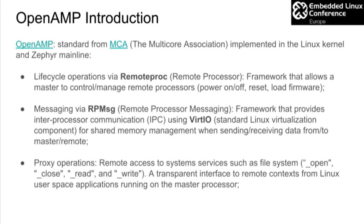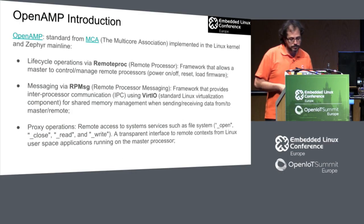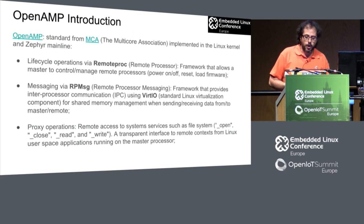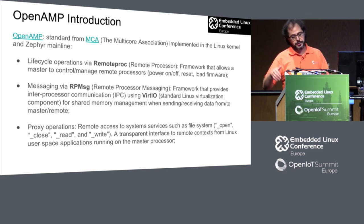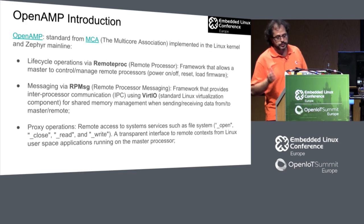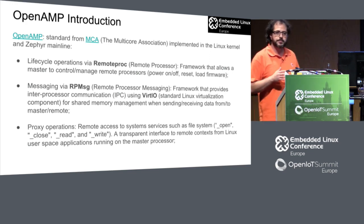Then there is the messaging framework RPMSG — Remote Processor Messaging — that provides inter-processor communication by using the VIRTIO component for shared memory management when sending or receiving data between master and remote core. There are also proxy operations where user-space apps running on the master side have transparent access to the remote using filesystem calls like open, close, read, and write.